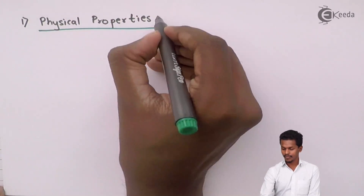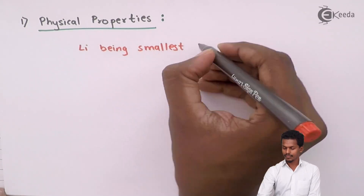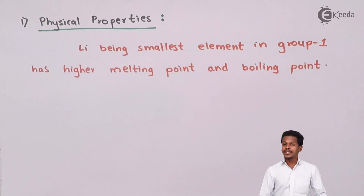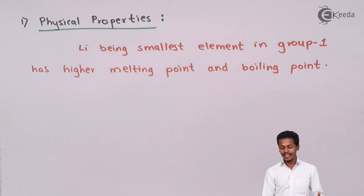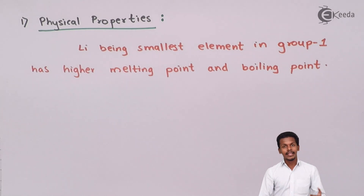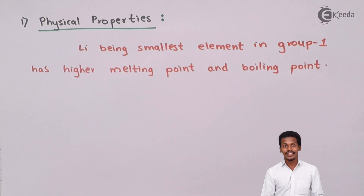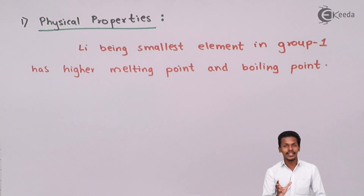Talking about physical properties: lithium, being the smallest element in group 1, has a higher melting point and higher boiling point. In comparison, sodium does not have a very high melting point or boiling point, which is why it is not very tough — sodium can even be cut with a knife. So lithium is comparatively quite different from sodium and the other elements belonging to group 1.